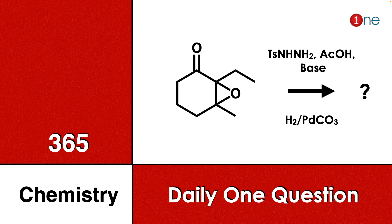Welcome to One Chemistry. This is the 365 Chemistry Series — one daily question for you. Here you have cyclohexanone and an epoxide, a side chain with ethyl and methyl groups, hydrogen, acid and base. Then you are using hydrogen and palladium carbonate. You have to guess what will be the final product.